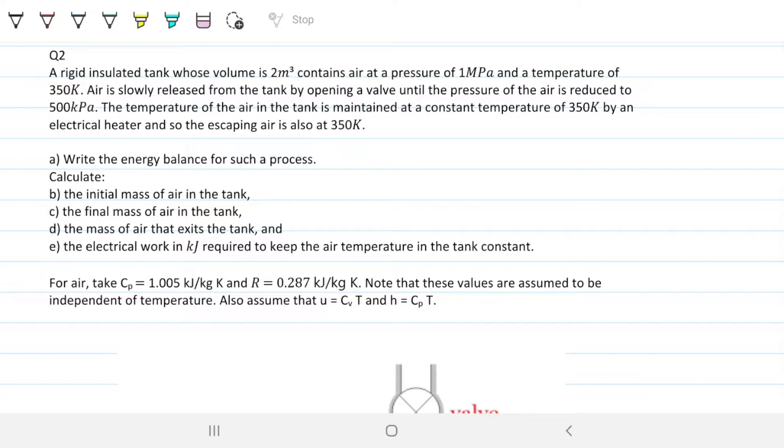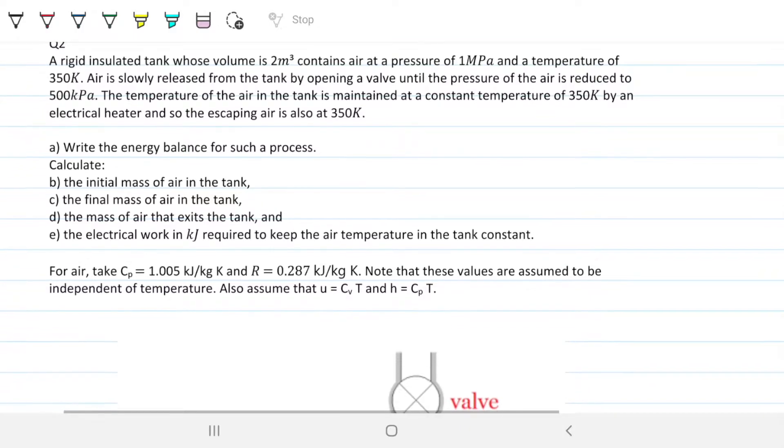A rigid insulated tank whose volume is 2 meters cubed contains air at a pressure of 1 megapascal and at a temperature of 350 Kelvin. Air is slowly released from the tank by opening a valve until the pressure of the air is reduced to 500 kilopascals. The temperature of the air in the tank is maintained at a constant temperature of 350 Kelvin by an electrical heater, and so the escaping air is also 350 Kelvin. Great, that makes our lives easier.